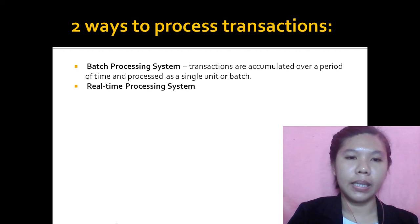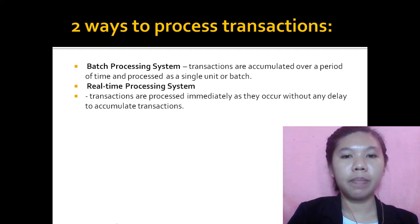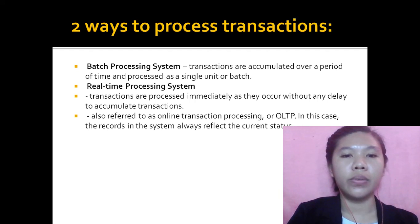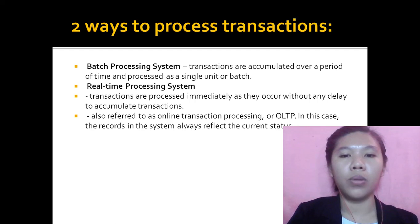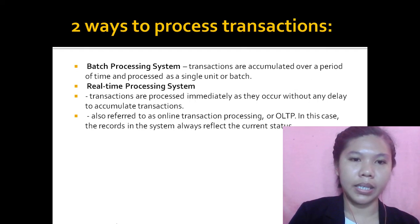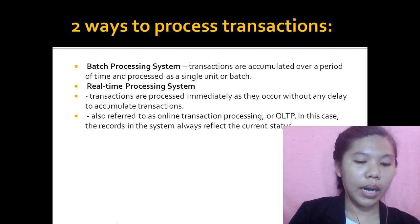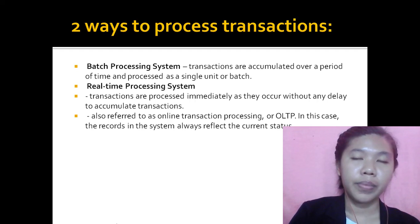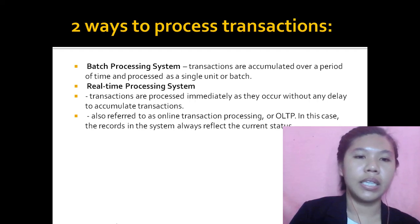The second is real-time processing. Transactions are processed immediately as they occur without any delay, also referred to as online transaction processing or OLTP. The records in the system always reflect the current status. A good example is when you book a ticket and select a seat — that booking is made right away and nobody else can get that same seat. Any changes to your reservation are also updated in real-time.